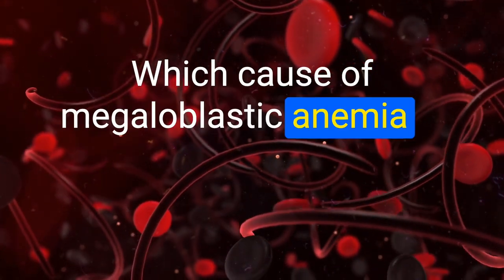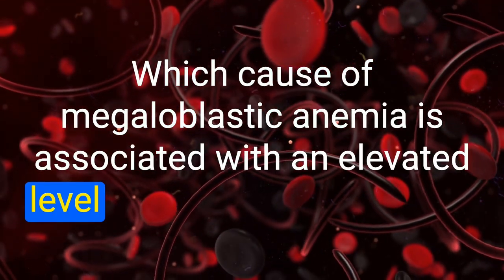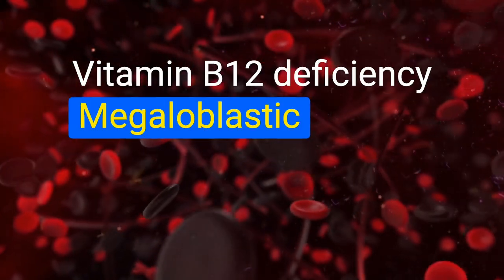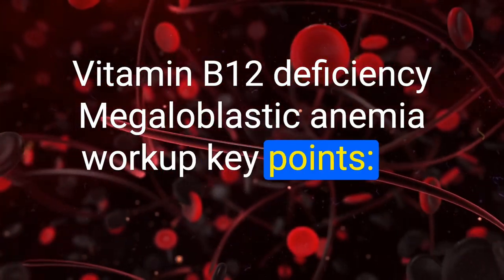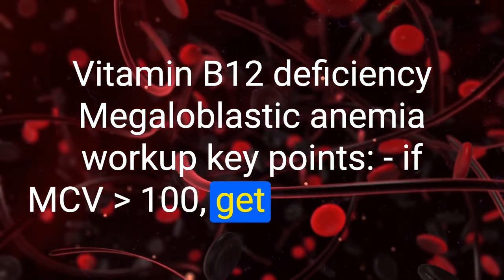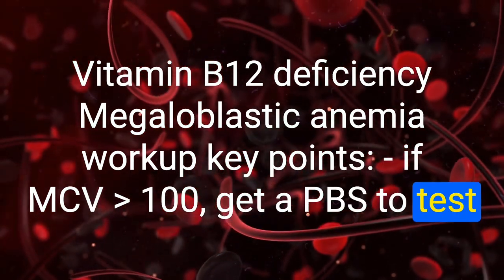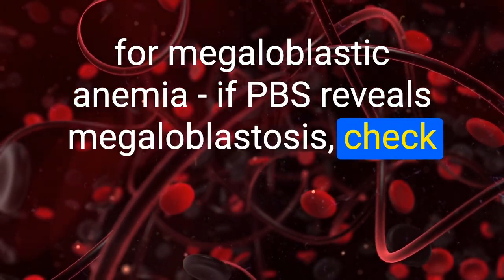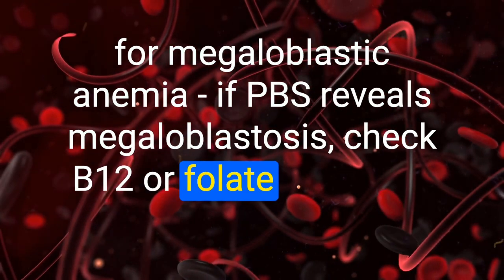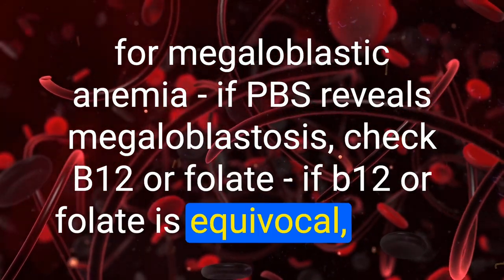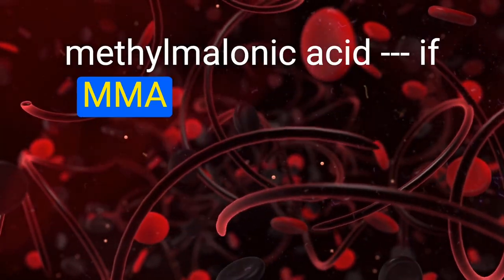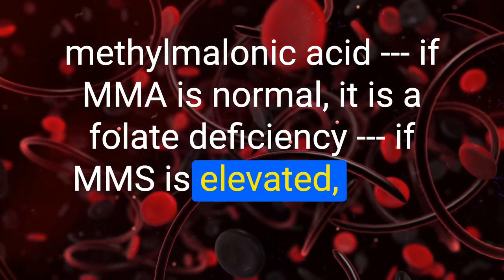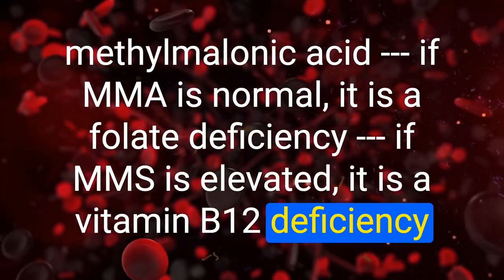Which cause of megaloblastic anemia is associated with an elevated level of methylmalonic acid? Vitamin B12 deficiency. Megaloblastic anemia workup key points: if MCV greater than 100, get a PBS. If PBS reveals megaloblastosis, check B12 or folate. If B12 or folate is equivocal, check methylmalonic acid. If MMA is normal, it is folate deficiency; if MMA is elevated, it is vitamin B12 deficiency.